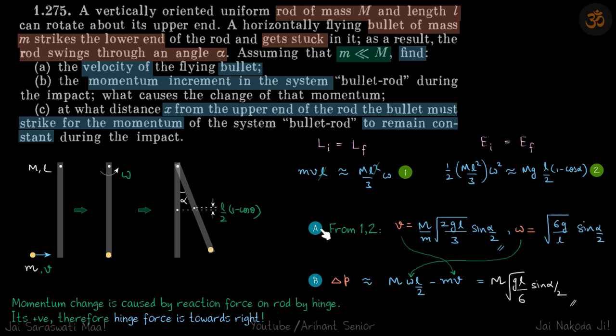Now second part, we need to find the change in momentum. So now we are talking about this case and this case. Change in momentum between these two cases: initial momentum is mv, and final momentum – because the center of mass will be traveling by ωl/2 – so final momentum is mωl/2. Change in momentum is mωl/2 - mv.